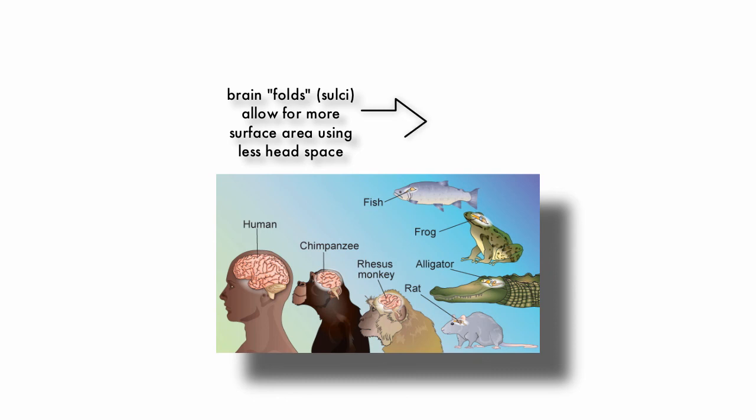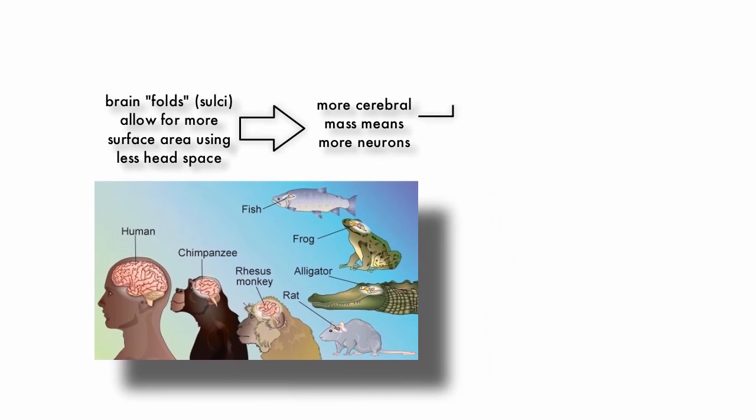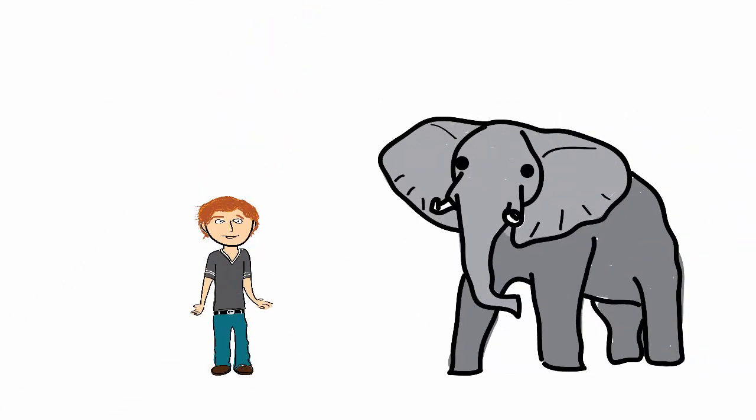Increased neocortical or cerebral mass is correlated with a greater number of neurons, different neurons, and increased information processing power. Thus, it is the increase in the surface area of the cerebrum that makes humans more evolutionarily advanced than other animals.